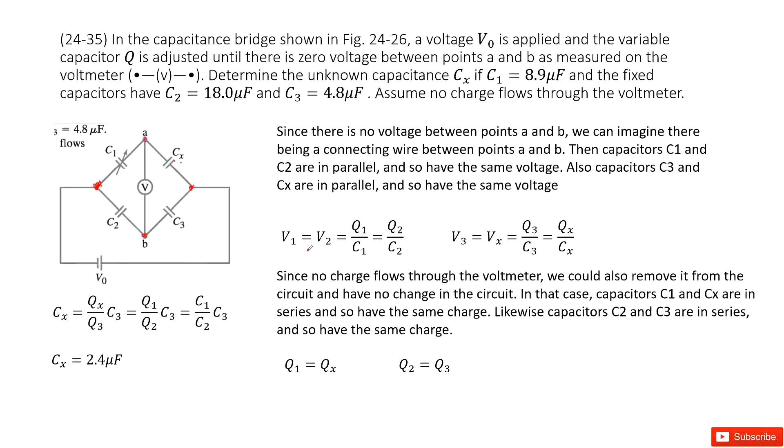And another one, it tells us no charge flows through voltmeter. So the charge from C1 will flow through Cx. There is no charge through the voltmeter. So the charge from C1 equals the charge at Cx. So we can write Q1 equal to Qx.